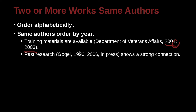How about this example here? Past research, Google, 1990, 2006, in press. Now we have three papers, and we order them by the earliest date first: 1990, 2006, and in press — which means it's at the publishers but it's not finished yet.